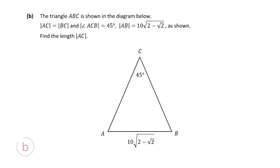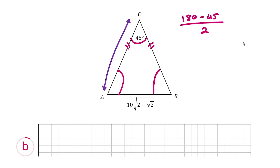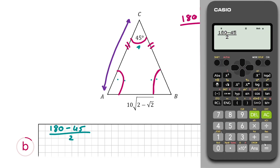Now for part B: triangle ABC has AC equal to BC, making it an isosceles triangle. In an isosceles triangle the two base angles are equal. We're given the angle at the apex as 45 degrees, so the two base angles are (180 minus 45) divided by 2. We're also told AB is 10 root 2 minus root 2, and we need to find the length AC. Calculating: the base angles are each 67.5 degrees.